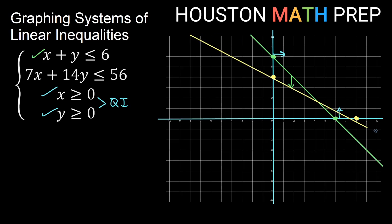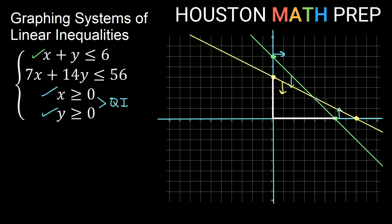Graphing through those points gives our line. The direction: I have a positive y term and a less than, so less than means below — I need to be below the yellow line. Focusing on quadrant 1, I need to be in quadrant 1 and below both diagonal lines. This zone in the first quadrant satisfies all four inequalities at the same time.